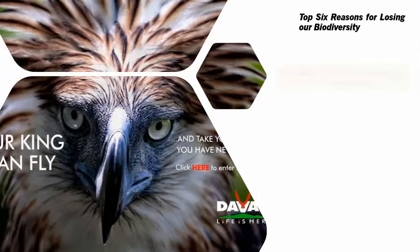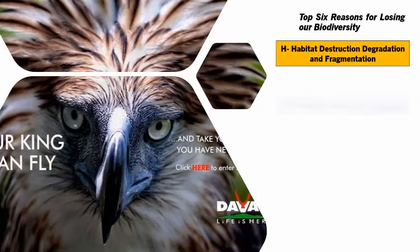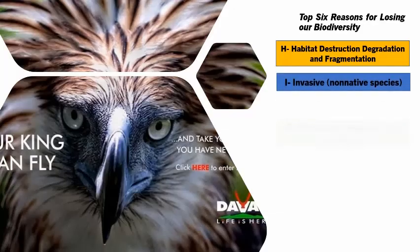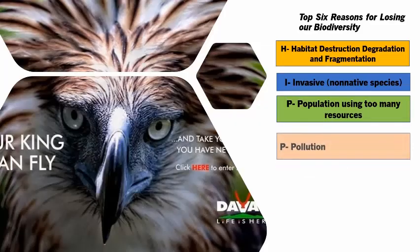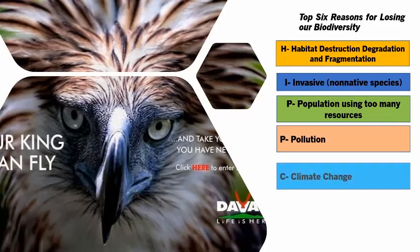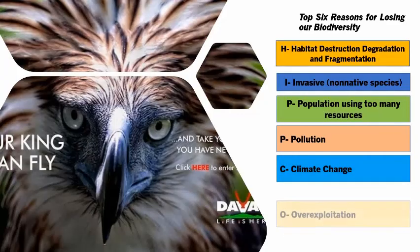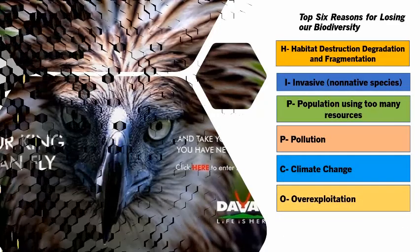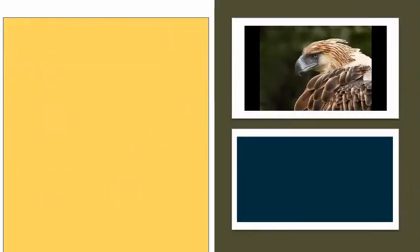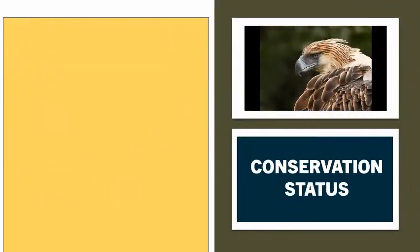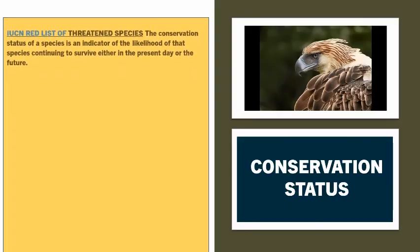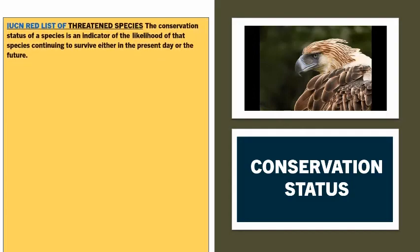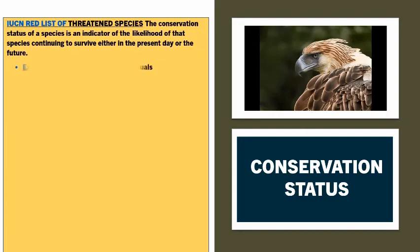Top 6 reasons for losing biodiversity. Next is conservation status. The IUCN Red List of threatened species — the conservation status of a species is an indicator of the likelihood of that species continuing to survive either in the present day or the future.